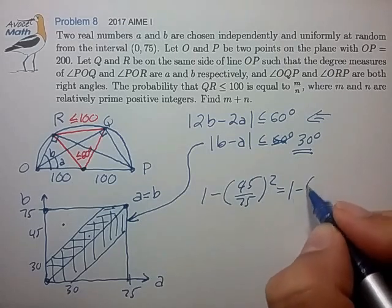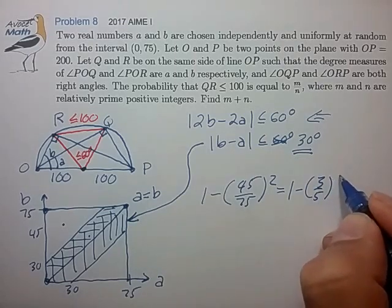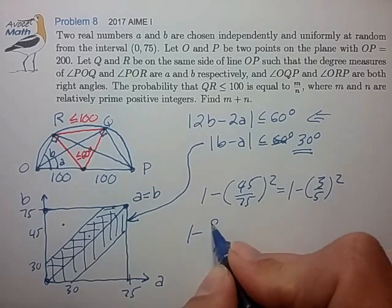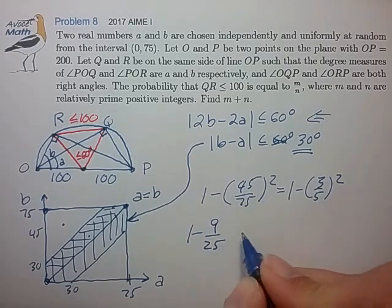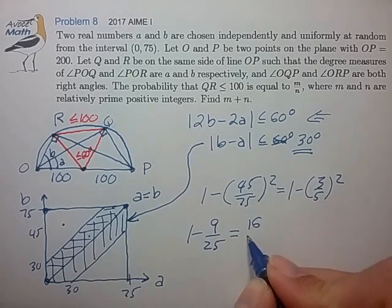That's 1 minus 3 fifths squared. And that's equal to 1 minus 9 over 25, or 16 over 25.